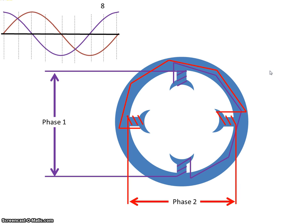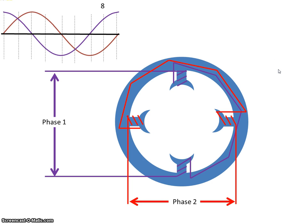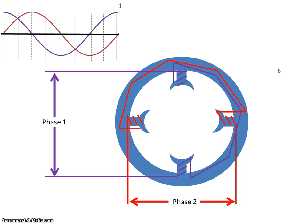And then finally at point eight, phase one has gone positive again so the north pole is now moved up here, and phase two is still negative so the north pole is here. Flux lines can't cross, so we take up an intermediary position — which is there. That brings us back to point one, where there's zero current in phase two and phase one is at maximum.